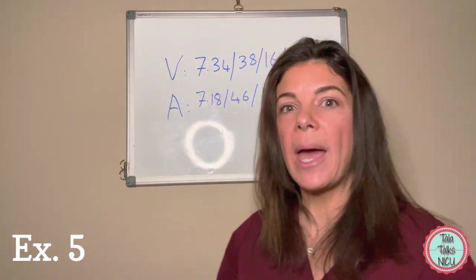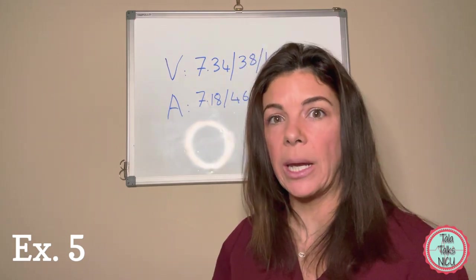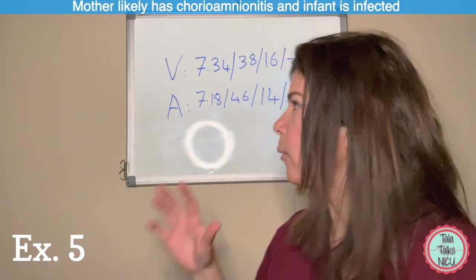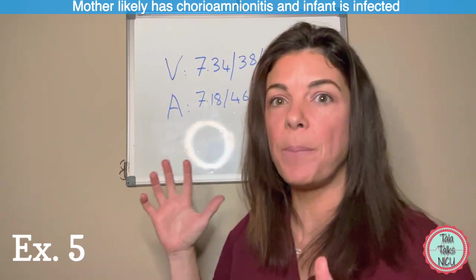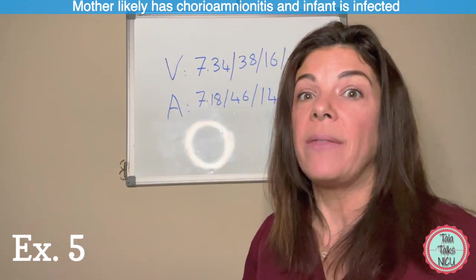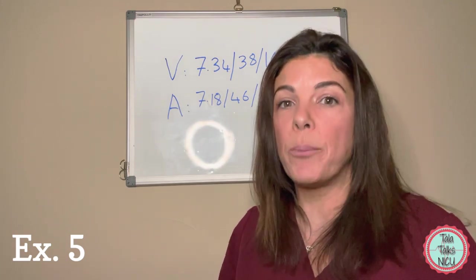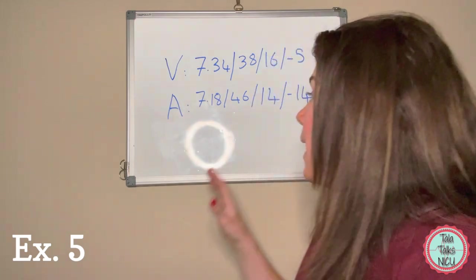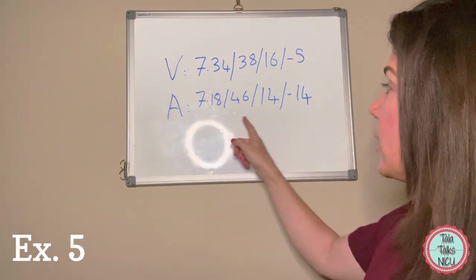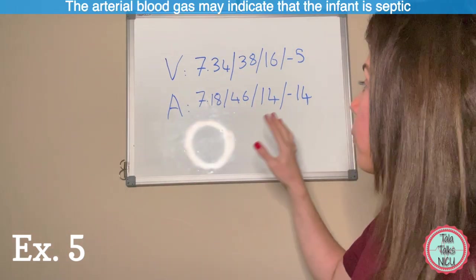If we had a different history and were thinking that maybe there was a tight nuchal or the baby was having decels with every contraction, maybe we could make the argument here that this is some sort of cord compression. But we don't really get that from the history, and the Apgars were excellent, 9 and 9. The venous blood gas 7.34 and minus 5 doesn't really reflect that anything bad was going on with the placenta either.